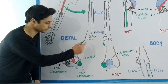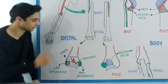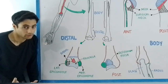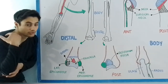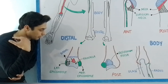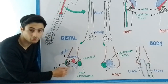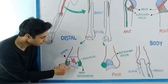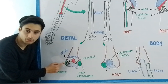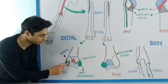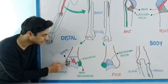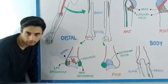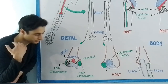The distal extremity of the humerus — here is the anterior side and the posterior side. The anterior side has a fossa in the center known as the coronoid fossa, which contains the coronoid process of the ulna during flexion of the elbow joint. Below the coronoid fossa is the trochlea, which articulates with the trochlear notch of the ulna. On the lateral side of the trochlea is a spherical structure known as the capitulum, which articulates with the radius bone. Above the capitulum is the radial fossa, which contains the head of the radius during flexion.